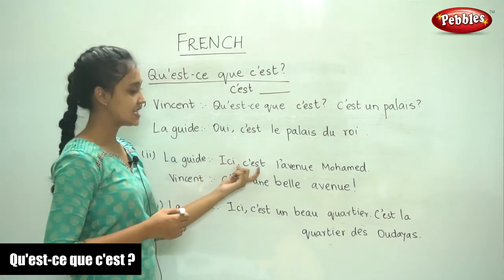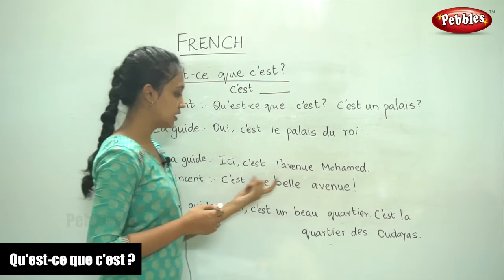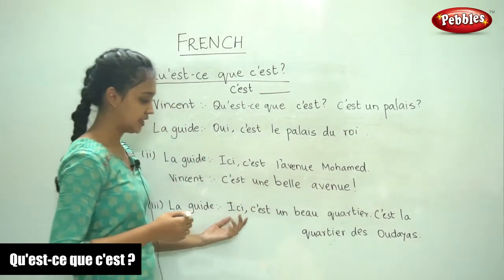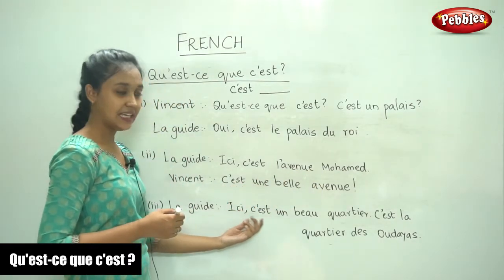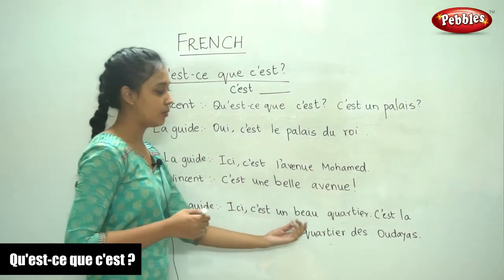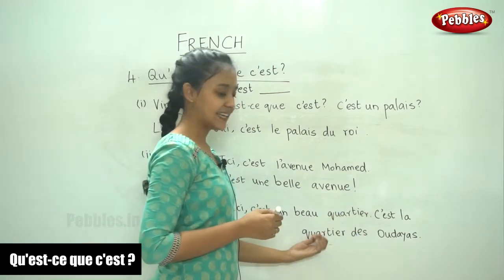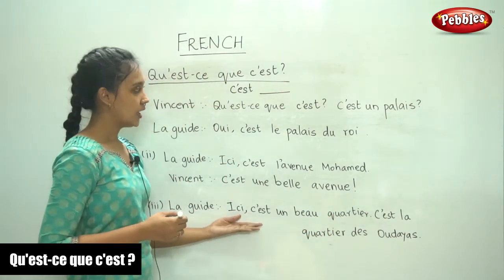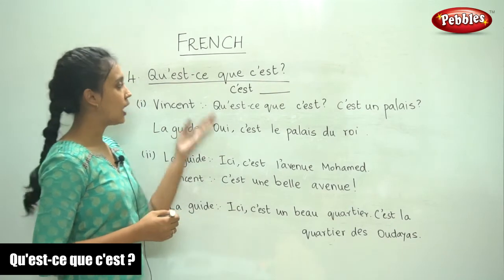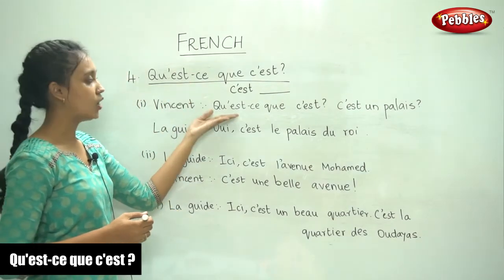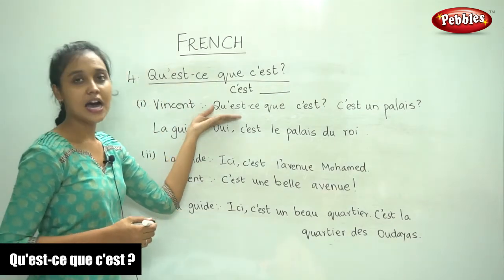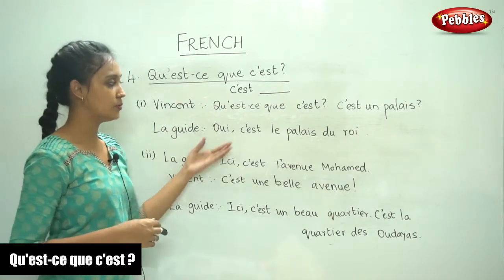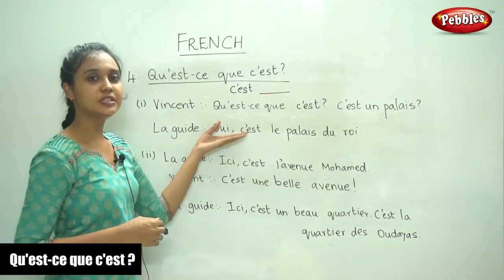'Ici, c'est l'Avenue Mohamed, c'est une belle avenue. Ici, c'est un beau quartier, c'est la quartier des Udayas.' So now we know how to ask this question and how to answer this question. We will move on to the next part.